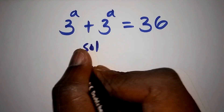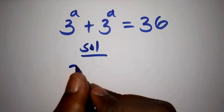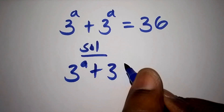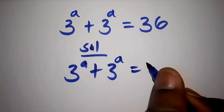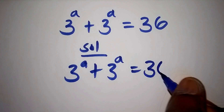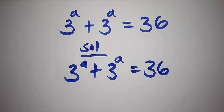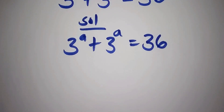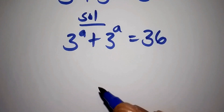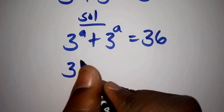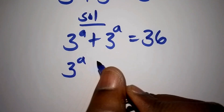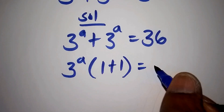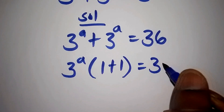So on our solution, this is what we have: 3 to the power of a plus 3 to the power of a is equals to 36.